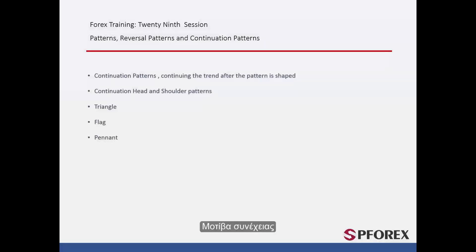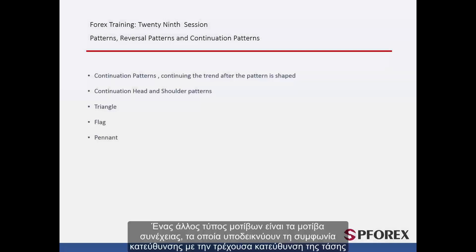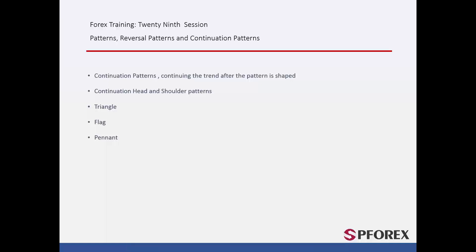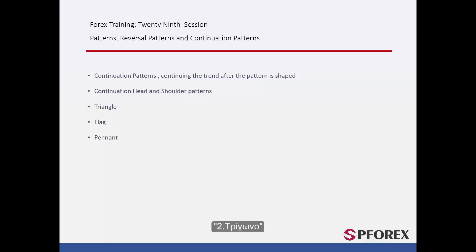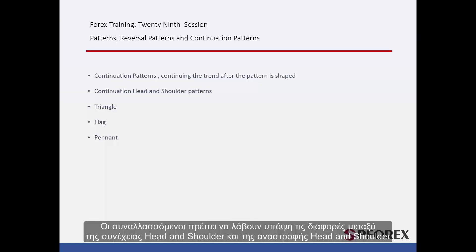Another type of pattern is Continual Patterns, which indicates the agreeing direction with current trend direction. Some continual patterns are as follows: 1. Continual Head and Shoulder, 2. Triangle, 3. Flag, 4. Pennant. Traders must consider the differences between Continual Head and Shoulder with Reversal Head and Shoulder.